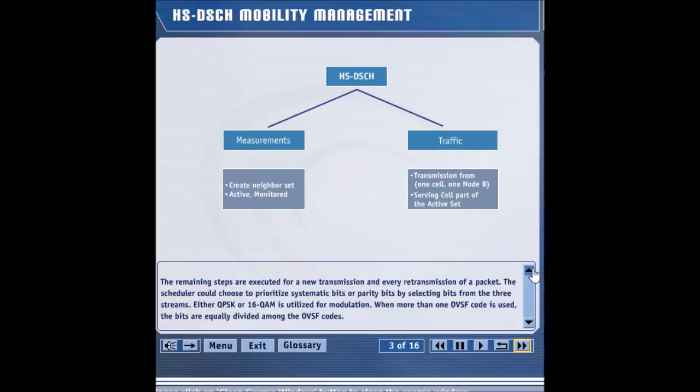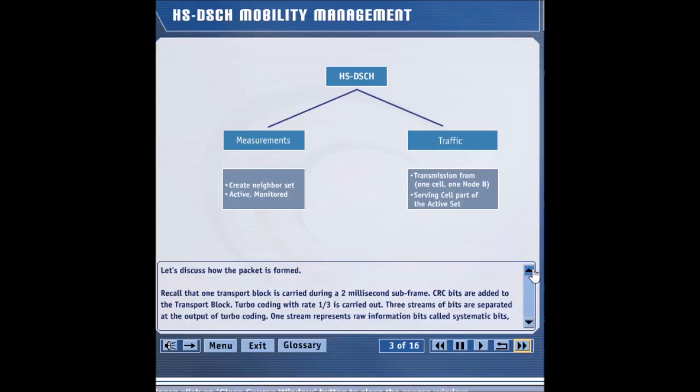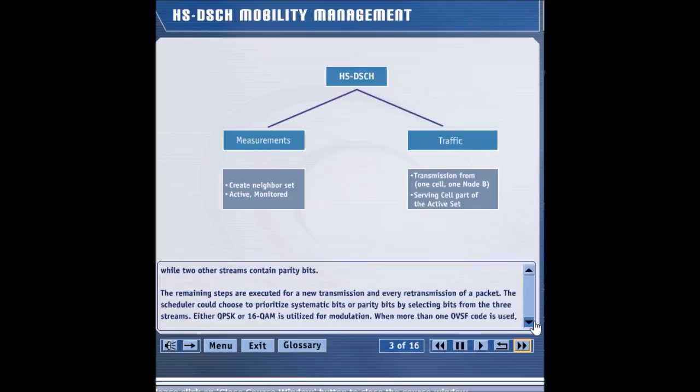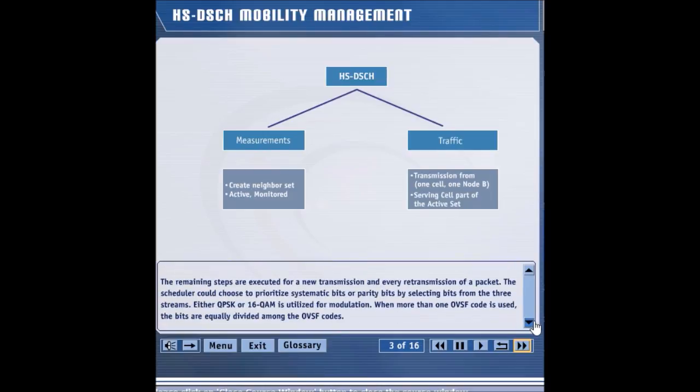In an HSDPA system, only one cell transmits the packet to the UE. There is no softer or soft handover for the high-speed data transmission. This cell is always a member of the active set.